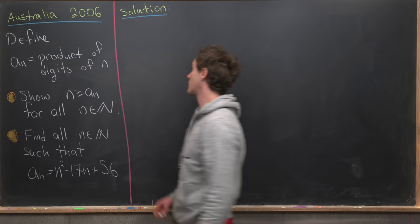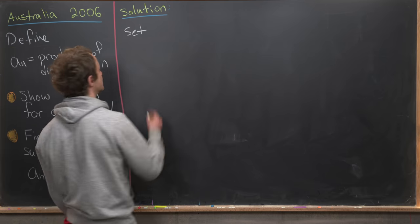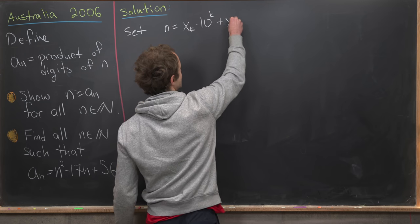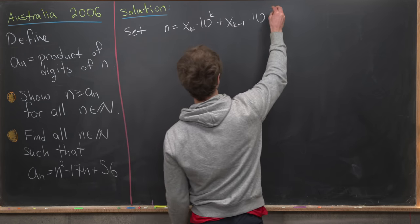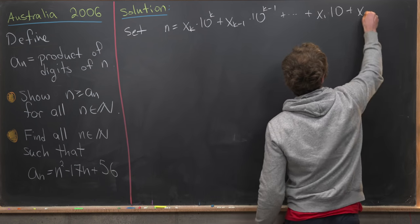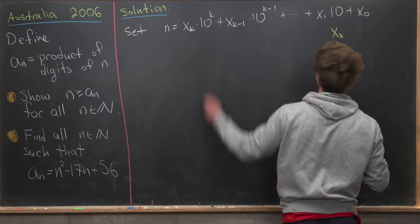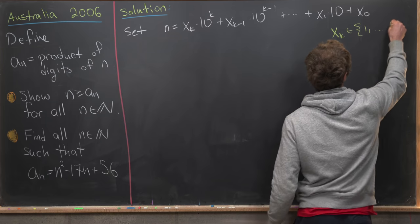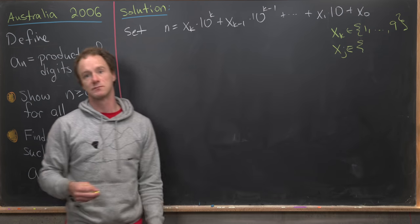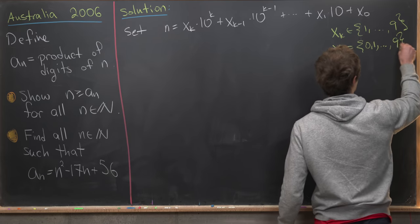We'll do this first goal first. Let's expand n in its base-10 representation. We can write n as x_k × 10^k + x_{k-1} × 10^{k-1} all the way down to x_1 × 10 and then finally x_0. We might as well take x_k, that highest order term, to be from the set 1 to 9, whereas x_j for all other values can also be 0, so we've got 0 through 9 for those.